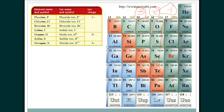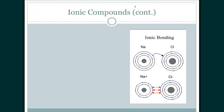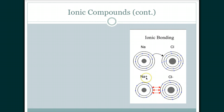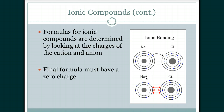When two ions come together — in this case sodium and chloride — chloride needs one electron and sodium is happy to give it up. One electron from sodium is transferred to chlorine, and we end up with sodium chloride. The compound's total charge is zero because +1 and -1 together equal zero, so any ionic compound, like any neutral atom, has a net charge of zero.